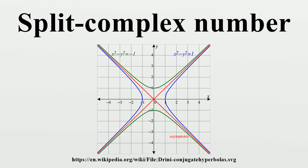In abstract algebra, the split complex numbers are a two-dimensional commutative algebra over the real numbers, different from the complex numbers.